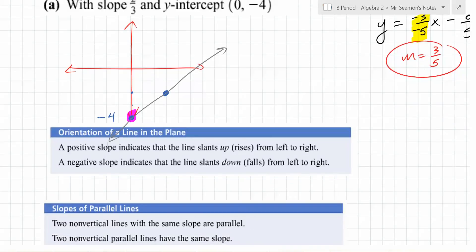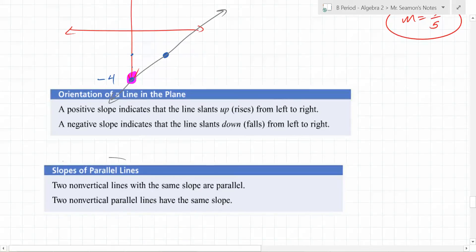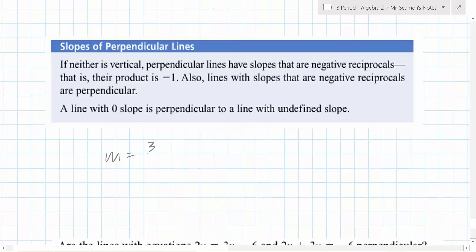We've already talked about this. Positive slope indicates we're going up from left to right. Negative goes down. This is important. The word parallel. Two lines are parallel if they have the same slope. Two non-vertical lines with the same slope are parallel. Two non-vertical parallel lines have the same slope. So, if I tell you two lines are parallel, that tells you that they have the same slope. That's it. That's it. The slope of line 1 was 3 over 4.